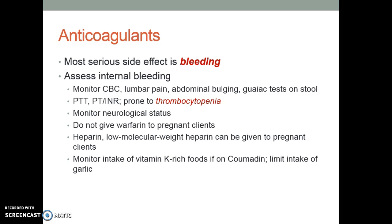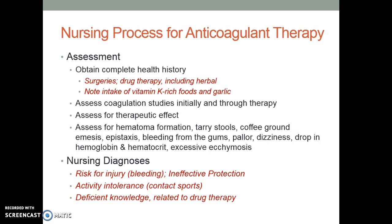Monitor intake of vitamin K-rich foods if the patient is on Coumadin, and limit intake of garlic. Generally, tell patients to maintain a consistent intake of vitamin K-rich foods, and the INR will be adjusted based on that — but not to change things too much. When caring for a patient on anticoagulant therapy, make sure you know their complete history and review their coag studies both initially and during therapy. If a patient is on a heparin drip, it is your responsibility to check what the last PTT was, whether adjustments were made, if another is due, or if an adjustment needs to be made. Assess for therapeutic effect and signs or symptoms of abnormal bleeding.